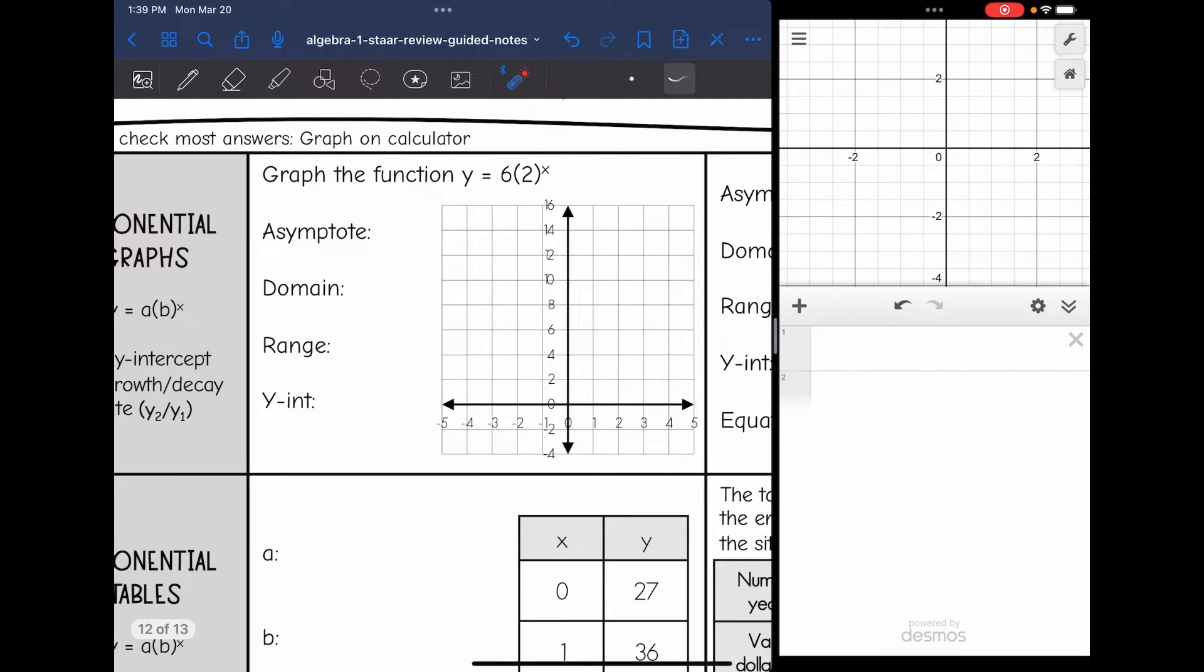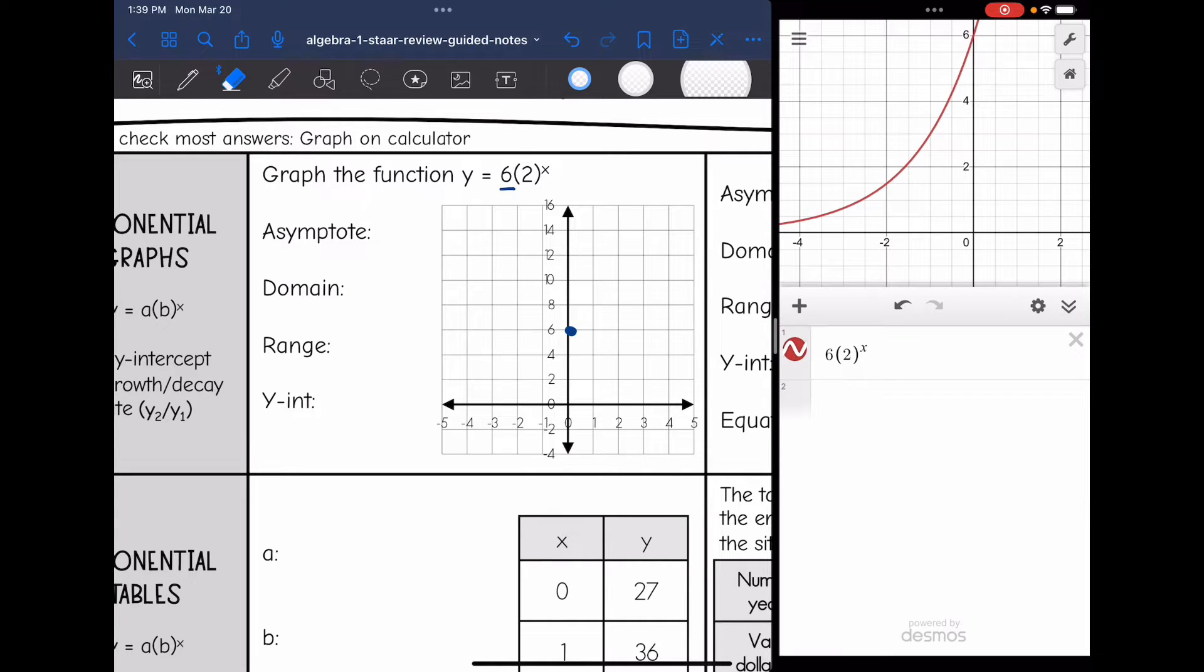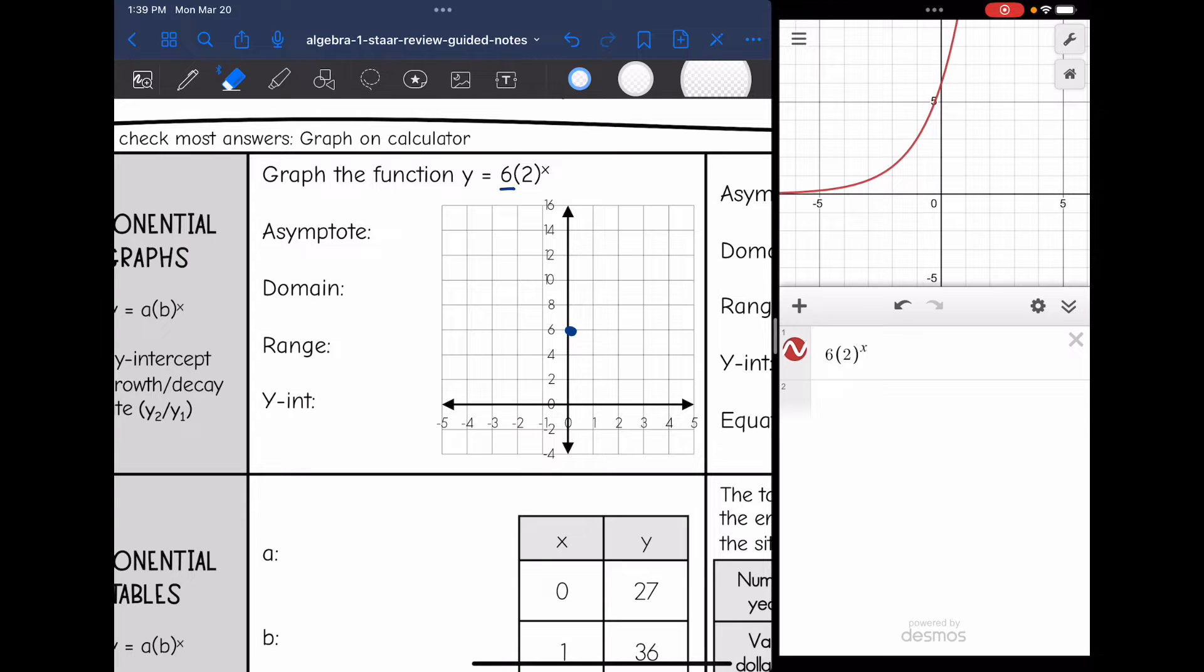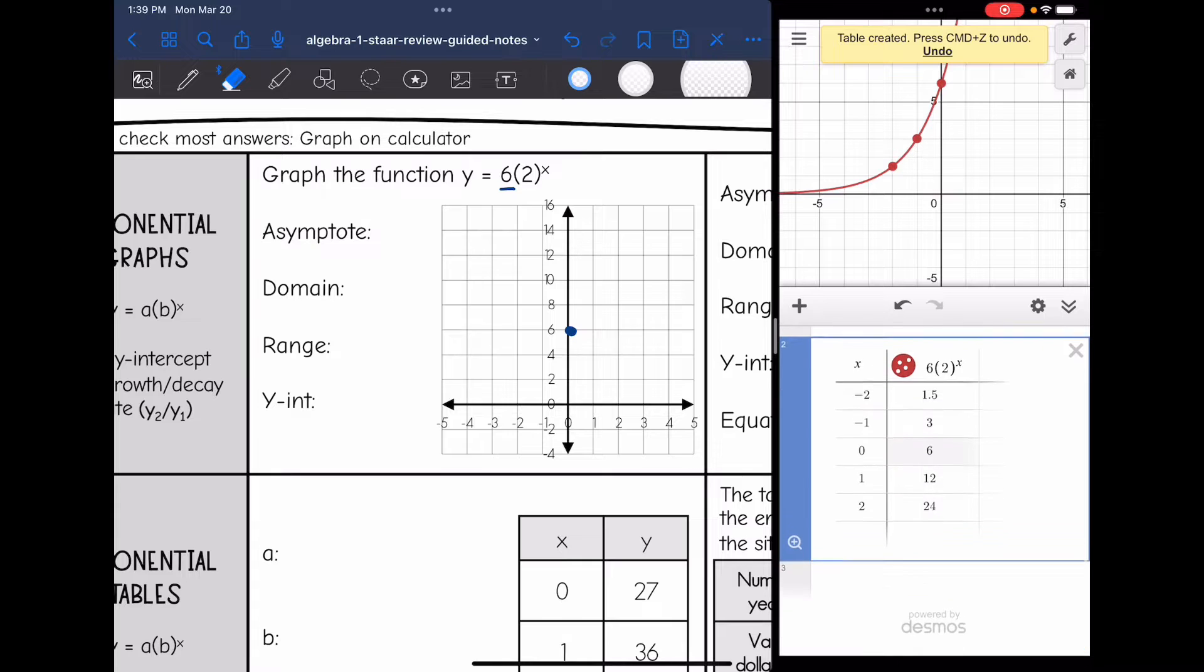So let's first graph this equation, y = 6(2^x). Well, I know that the y-intercept is six, so I'm going to go ahead and put a point there. And I'm going to put 6(2^x) in my calculator. So there is what my graph is going to look like. I am going to get a table of values so I can graph some exact points though.